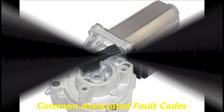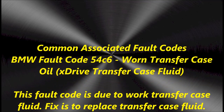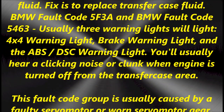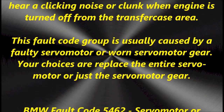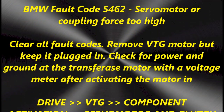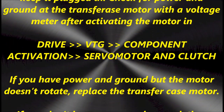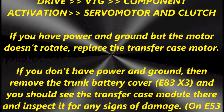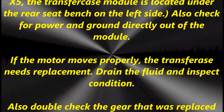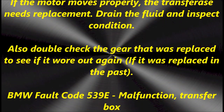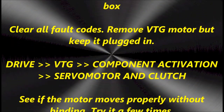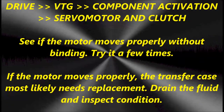Common codes associated with this unit — we're going to put them on screen — include 54C6. You're also going to get a code for worn out transfer case oil, and it's going to throw a 5F3A or a 5463, which is the one that we have. You have to replace the oil — it has a sensor that monitors the oil. There's also code 5462, the servo motor coupling force too high. These are typical codes for this unit. There is also the malfunctioned transfer case code, which is 539E. All these codes are associated with this particular unit.